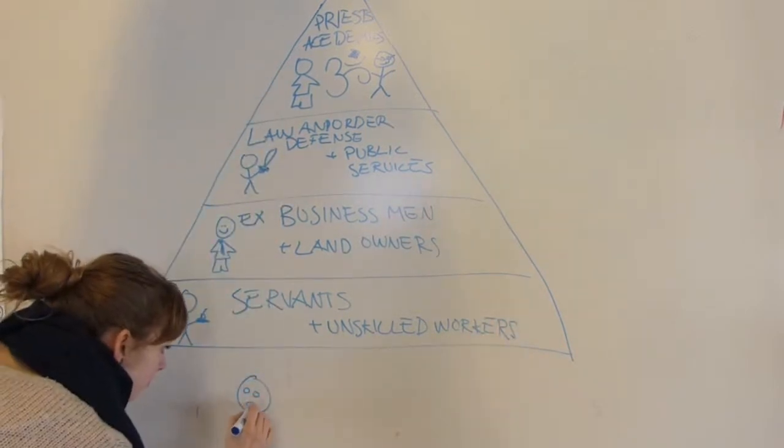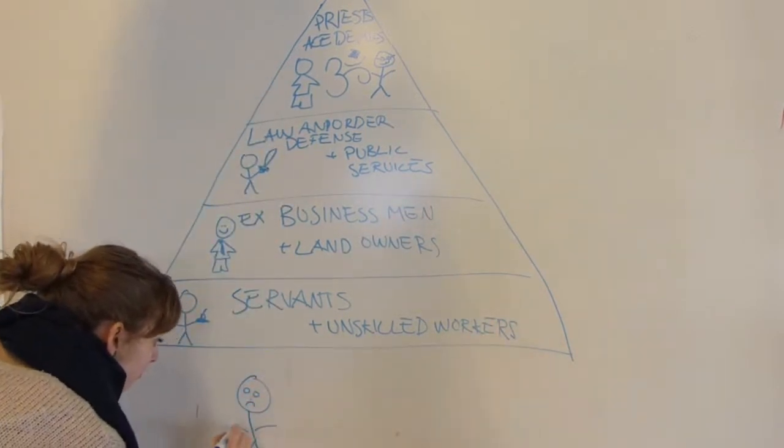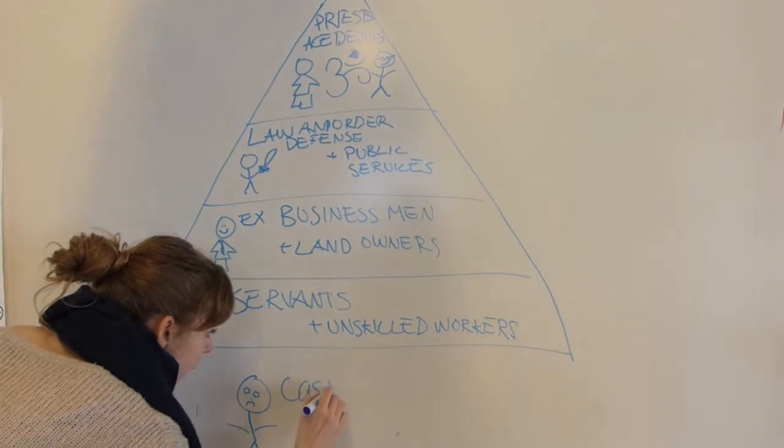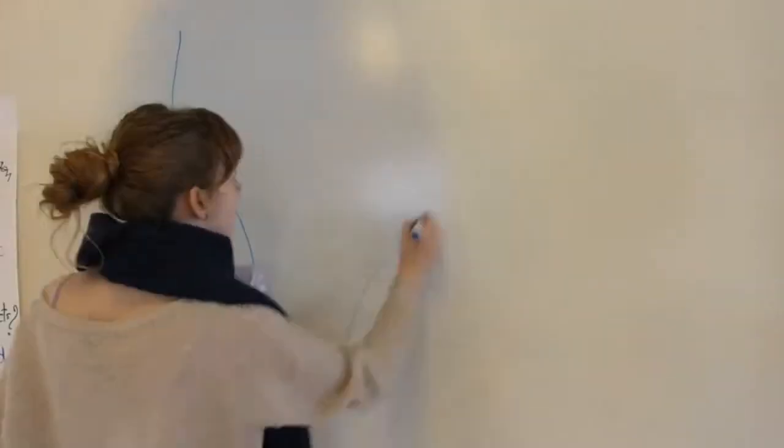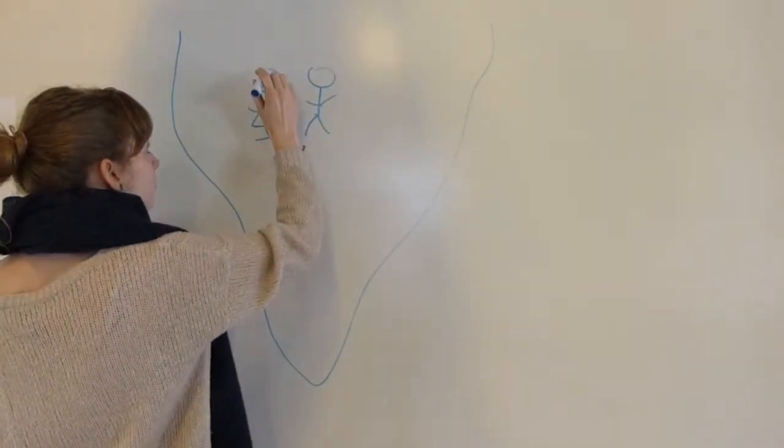But at the bottom of the system there are the caseless. They are the outcasts of society and they are seen as filth. But the caseless are not a small group of people.